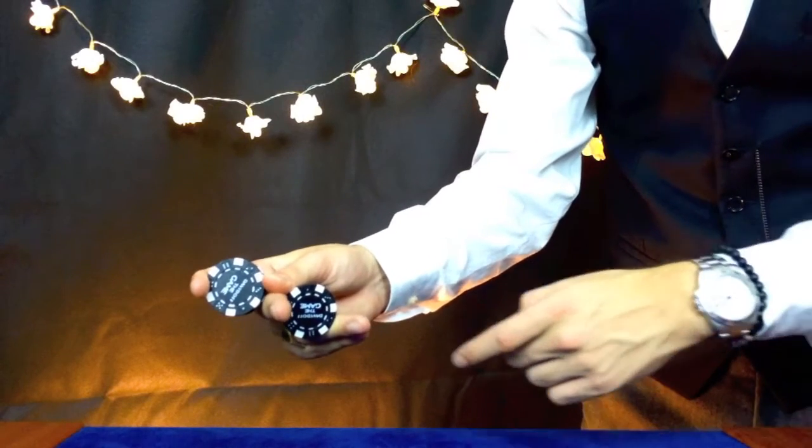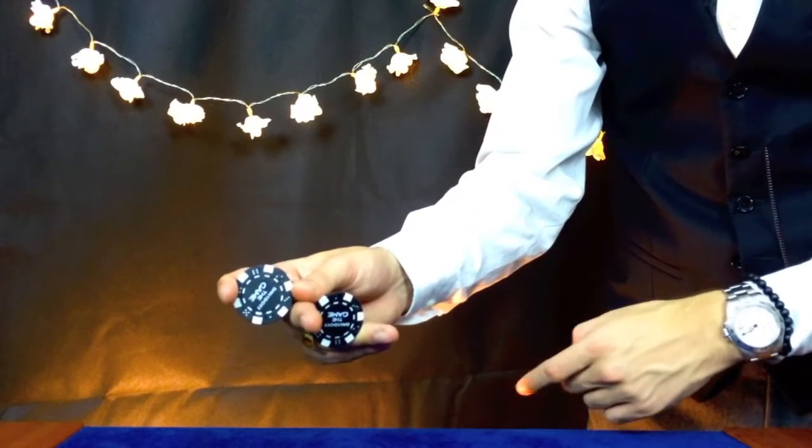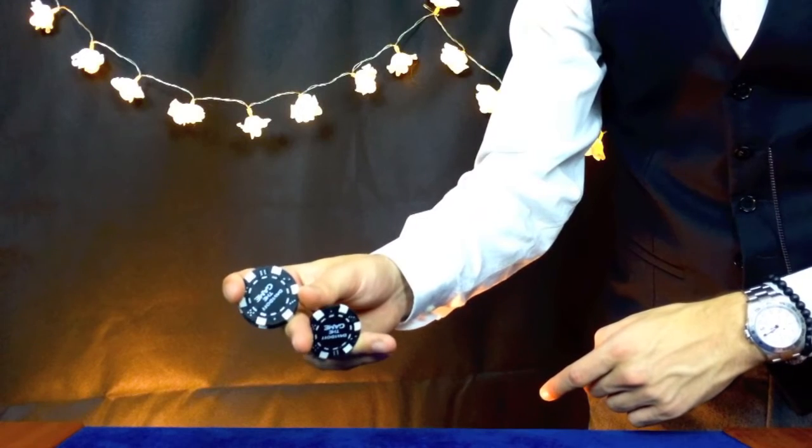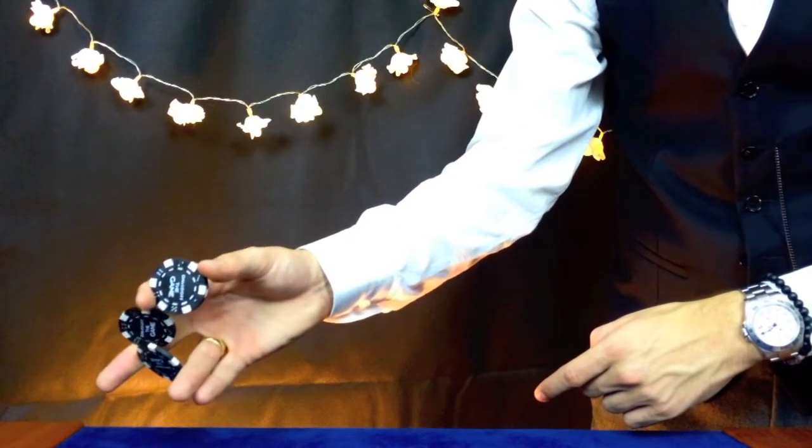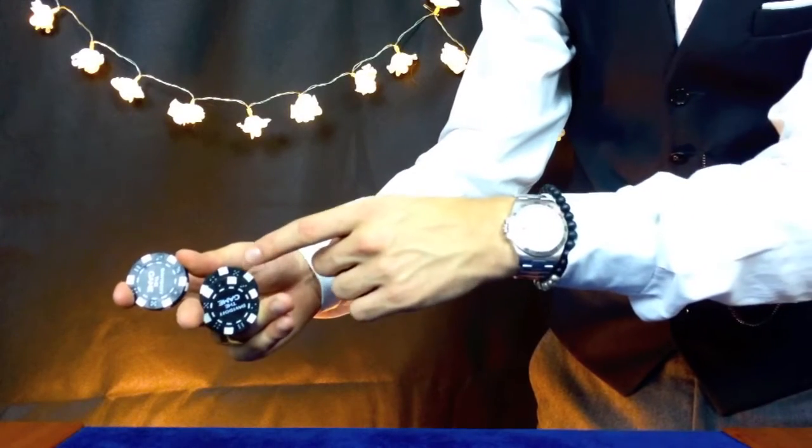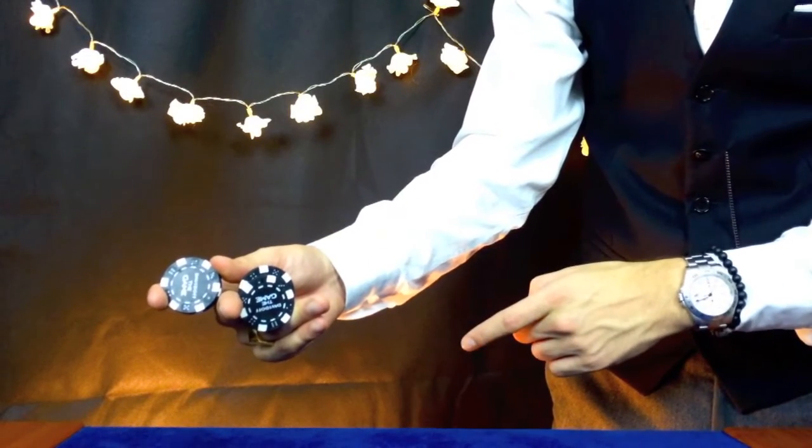Your thumb is immediately going to come over to your middle finger here and pull the back chip out. It's got to be the back one, and it's just going to rest on there. So you should have a sort of overlay.